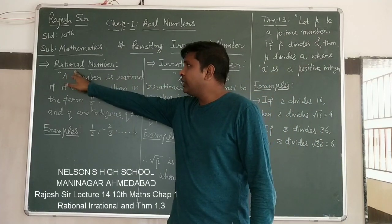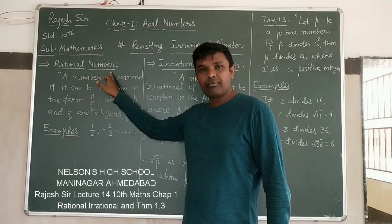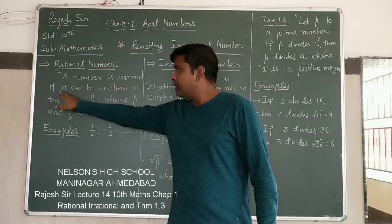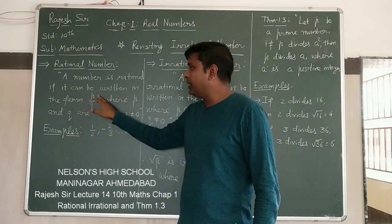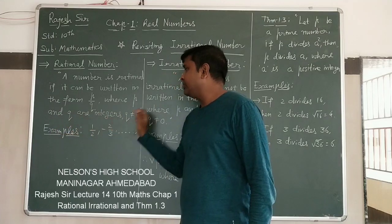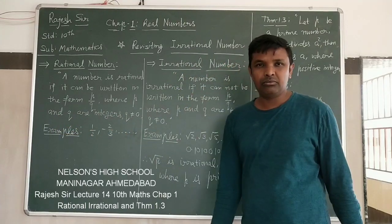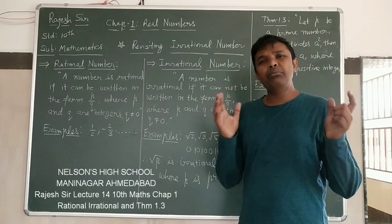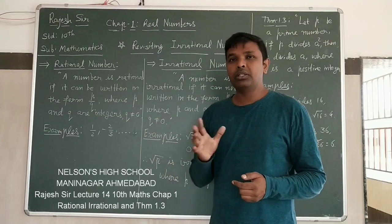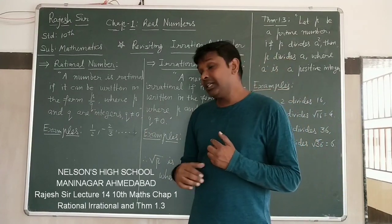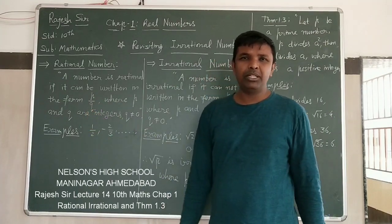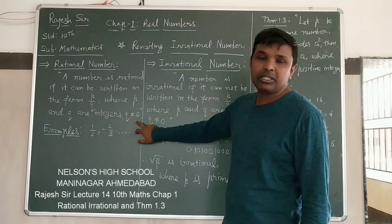So first you recall the rational number. A number is rational if it can be written in the form of P upon Q, where P and Q are integers and Q is not equal to 0. This is the condition, because if you take Q equal to 0, the number will be infinite, means undefined. So this condition is compulsory we have put.